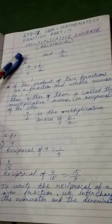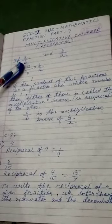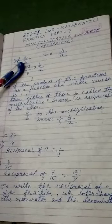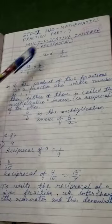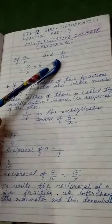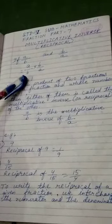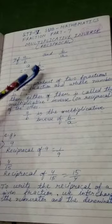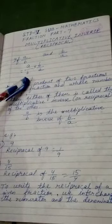that means a can be 1, 2, 3, 4, any number and b can also be equals to any non-zero number other than 0 and another fraction b by a. When we multiply both the fractions a by b and b by a, we will get the product 1.